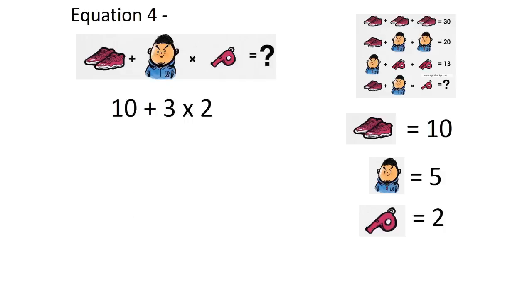So final equation will be 10 plus 3 multiplied by 2. Now applying BODMAS, we will always do multiplication first, so 10 plus 6, that is 16.